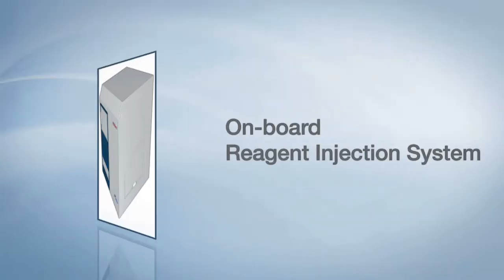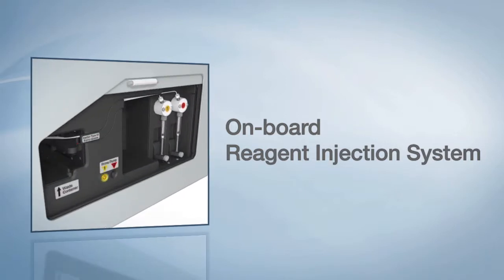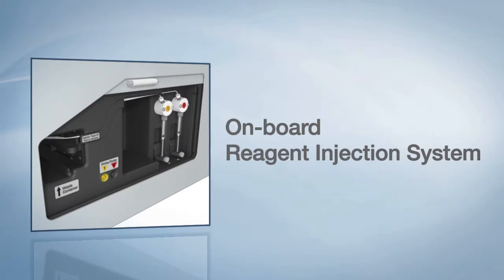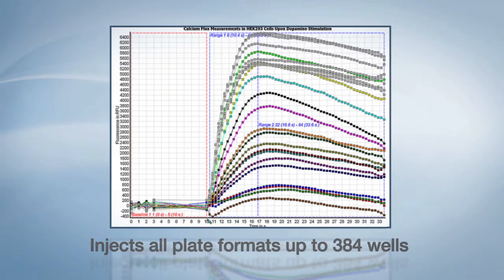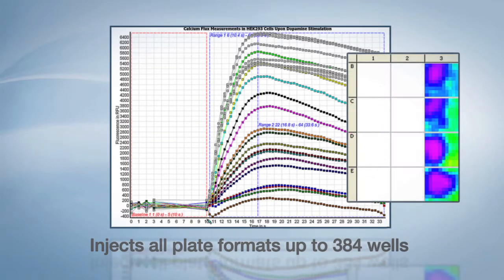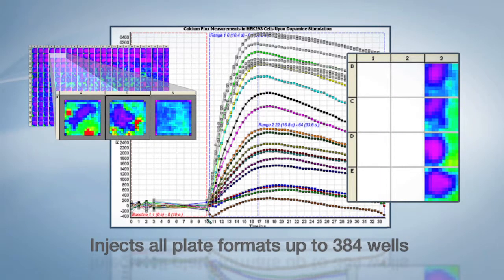With reagent injectors, the Ferristar FS can measure rapid kinetic events like luciferase or calcium responses in live cells. The injectors are fully integrated into the reader platform and don't require an external accessory or modified footprint. The system can inject into 384 well plates with two different reagents at the same time as measurement. Injection at the point of measurement allows for very fast reactions to be properly observed, up to 50 points per second.